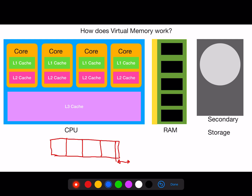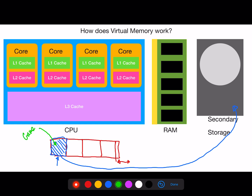So let's say we wanted to open up that game, and maybe Word — we haven't used Word for a while. It's running in the background but we haven't used it. So what virtual memory does is it takes this block of memory and puts it into secondary storage temporarily to free up space. This means the game can now occupy that spot in RAM.